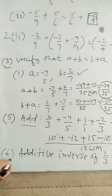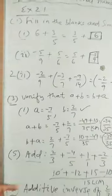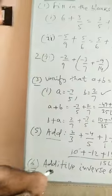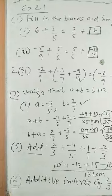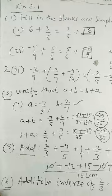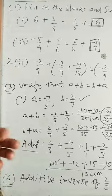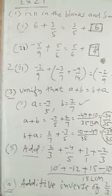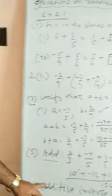Now, come to question number 6 from the same exercise 2.1. What is the additive inverse of a fraction? Here, the additive inverse of 2 by 3 is minus 2 by 3. How? If the sum of 2 numbers is 0, then they are called additive inverse to each other. So, here, 2 by 3 minus 2 by 3 equal to 0. So, additive inverse of 2 by 3 is minus 2 by 3.